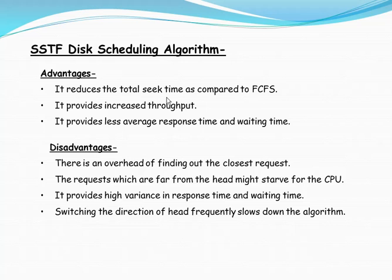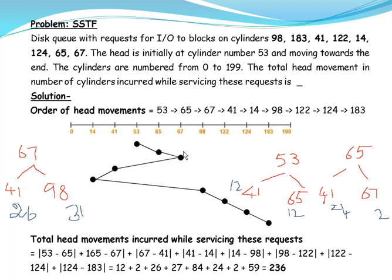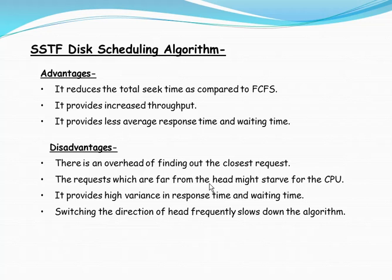There are some disadvantages to this algorithm. There is an overhead of finding the closest request every time. Requests that are far from the head may starve — they have to wait indefinitely. It also provides high variance in response time and waiting time. Most importantly, frequently switching the direction of the head slows down the algorithm, as you can see from the head movements going back and forth.